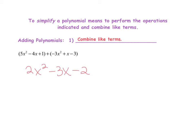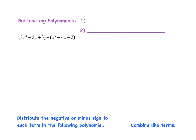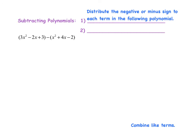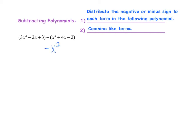Now let's move on to subtracting polynomials. When subtracting polynomials, there is a step you have to do before you can combine like terms, and that is to distribute the negative or minus sign to each term in the following polynomial. After you do that, you simply combine like terms. In our example, we have a trinomial and we are subtracting another trinomial. The negative sign needs to be distributed to each term in the second trinomial.